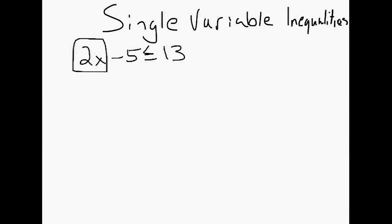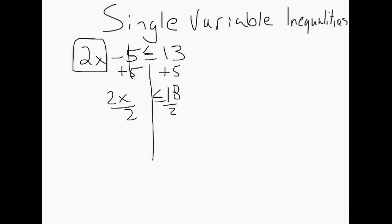The first thing we learned about was single variable inequalities, which just means that it's going to have one letter in it. A single variable inequality looks something like this: 2x minus 5 is less than or equal to 13. We solve these just like we do equations. We box them, draw our line down, get rid of the minus 5 by doing plus 5. That cancels out. 2x is less than or equal to 18. When it's beside it, we divide it, so we divide both sides by 2, and x is less than or equal to 9.